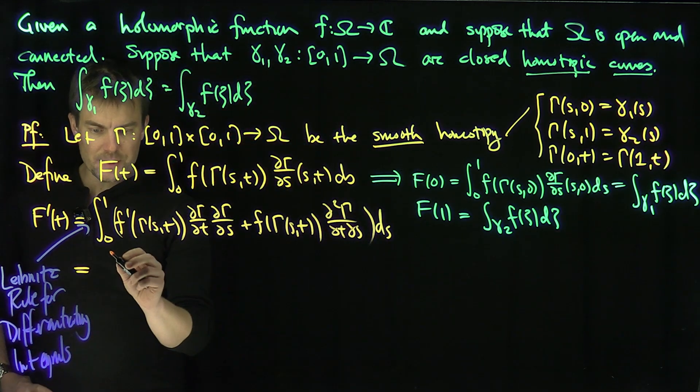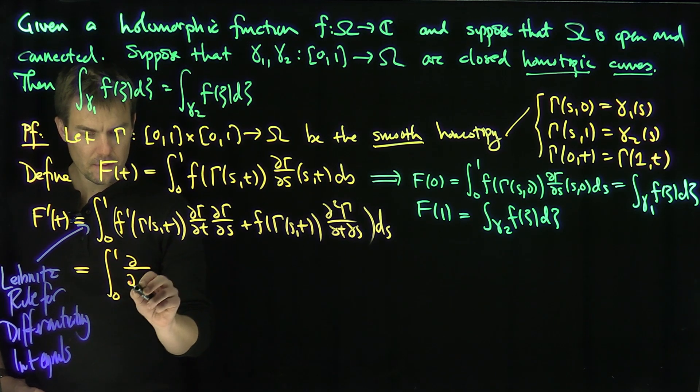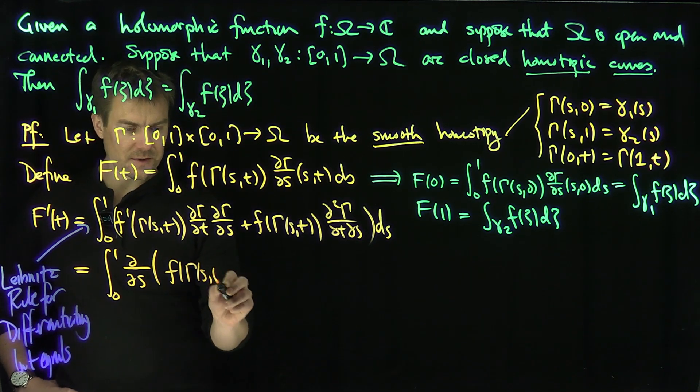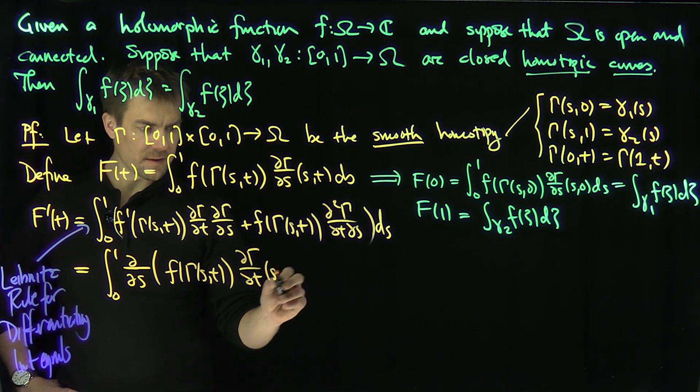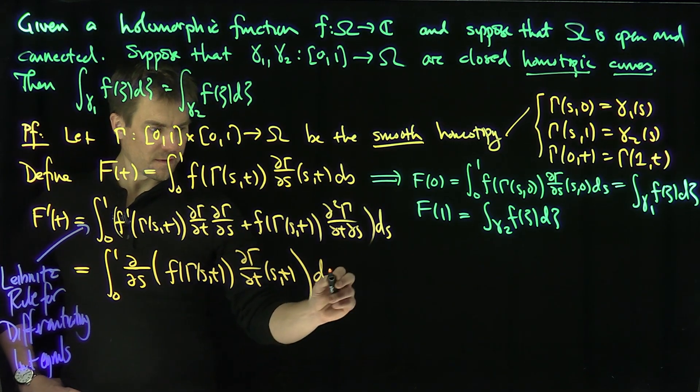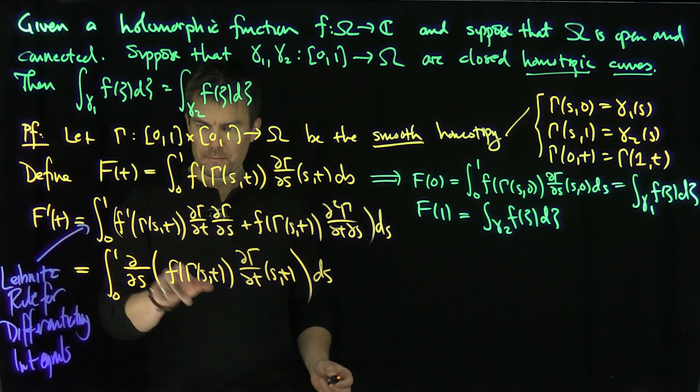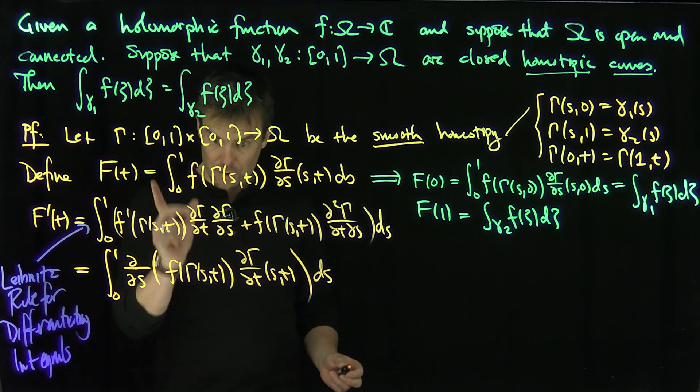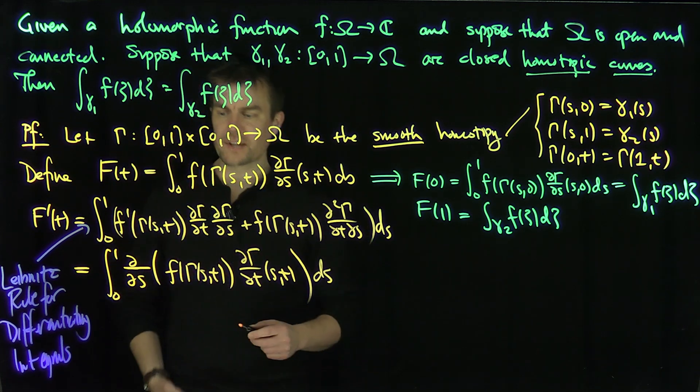Now this, of course, is just the integral from 0 to 1 of d by dS of what? Of F of gamma of (S,T), and then d gamma dT of (S,T) dS. Let's check that. What's the S derivative of this thing? It's going to be F prime of d gamma dT times d gamma dS. Good. And then F of gamma of (S,T) times the S T derivative of this thing. Perfect. So it works out. So now it's actually a perfect derivative.